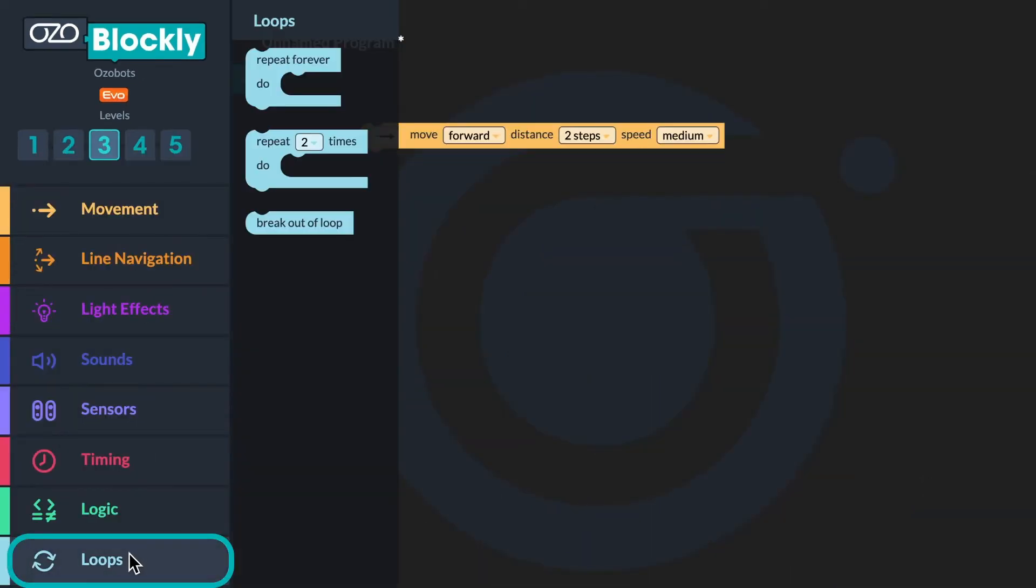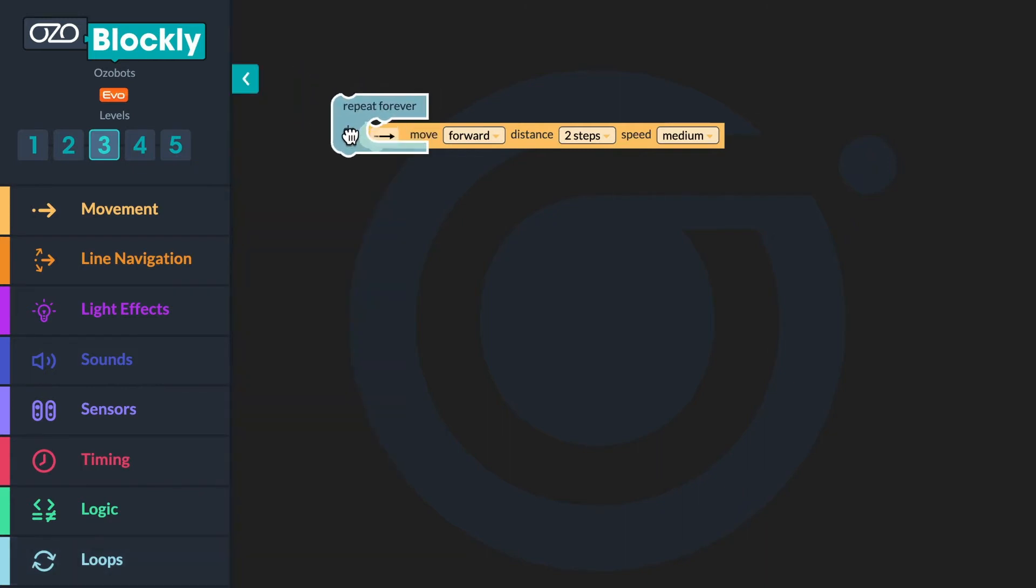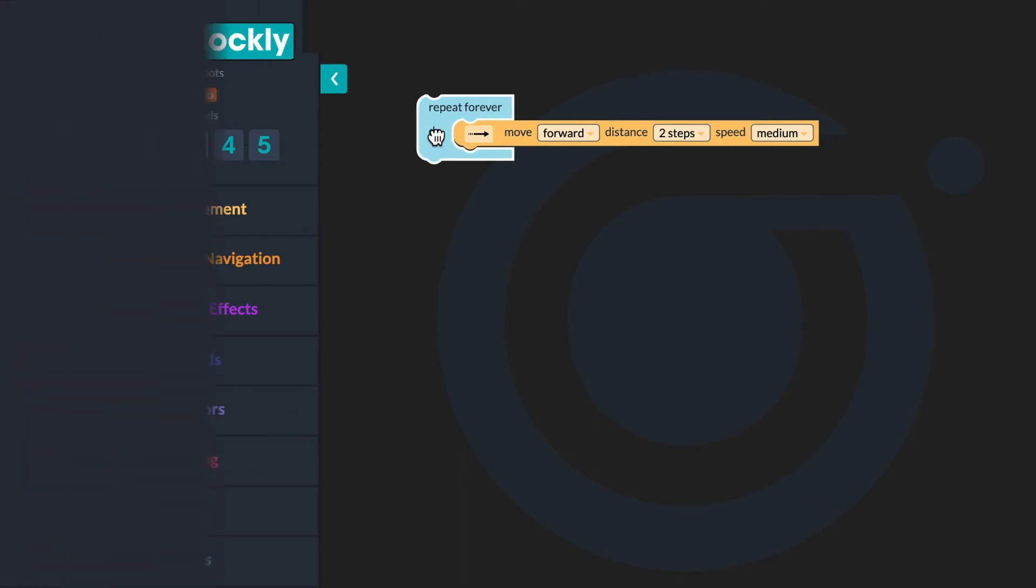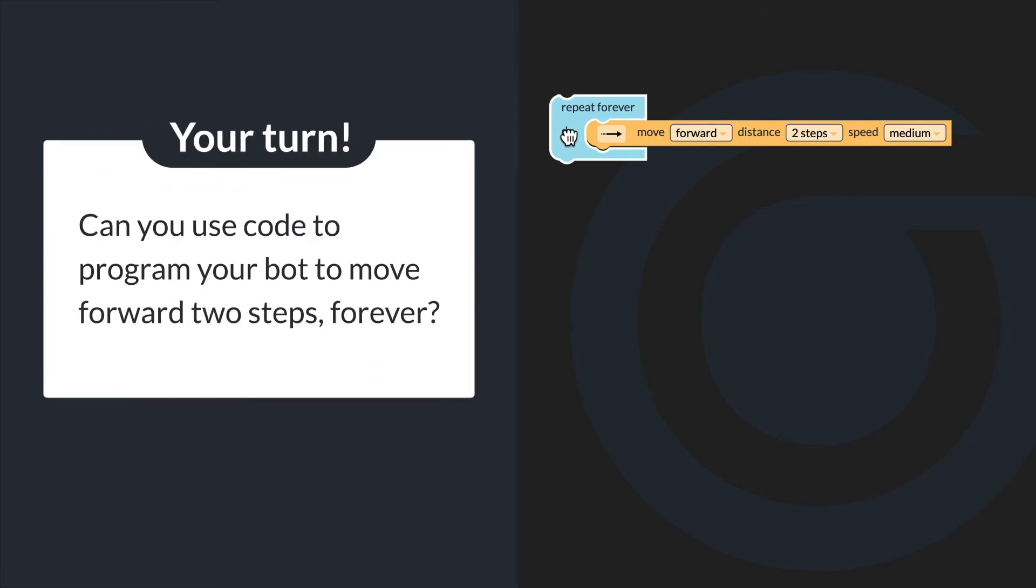Next, go to Loops in the Block panel. Click and drag a Repeat Forever block and wrap it around the Move Forward block. The Forever loop will tell the bot to continue to move when the program is running. Can you use code to program your bot to move forward two steps forever?